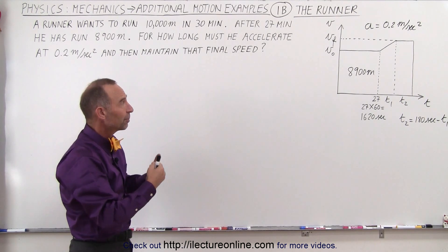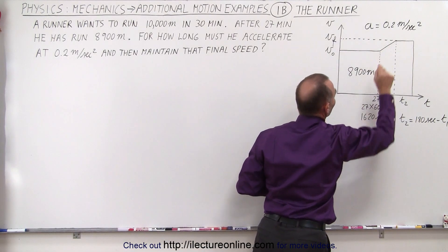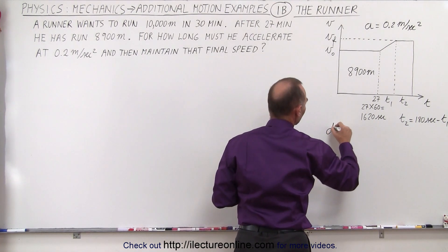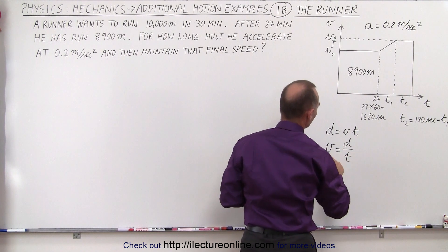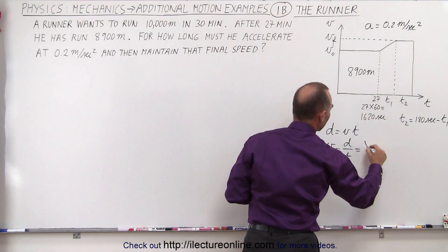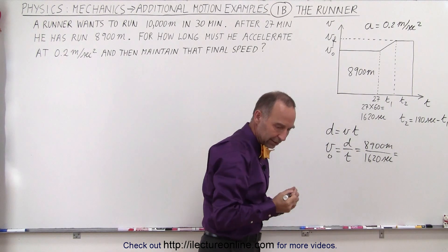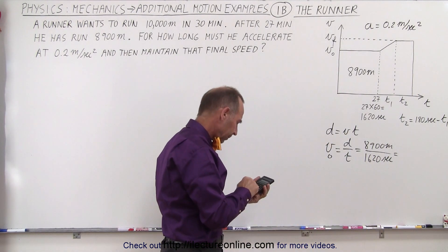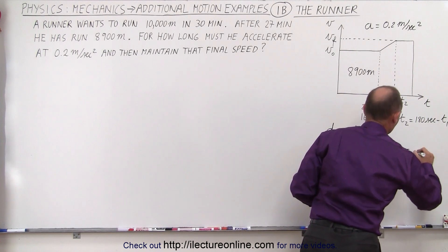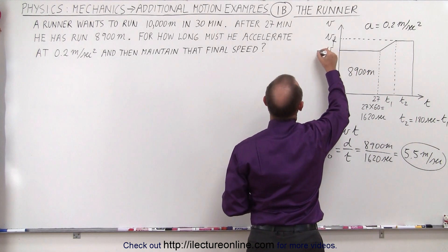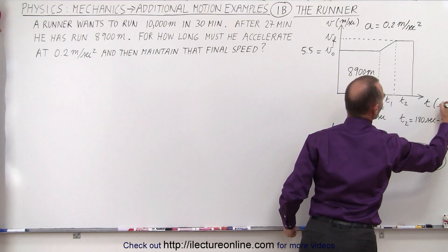Well, the first thing we want to do is find some expressions for v initial and v final. The velocity he keeps for the first 27 minutes and then the velocity he keeps for the last portion of the race. So we can say that distance is equal to velocity times time. So velocity equals distance divided by time. So the initial velocity will be the distance covered, which is 8,900 meters in the time of 1620 seconds. And with a calculator, we can find out what that is equal to. 8,900 divided by 1620, that's just about 5.5 meters per second. So this is the initial velocity.